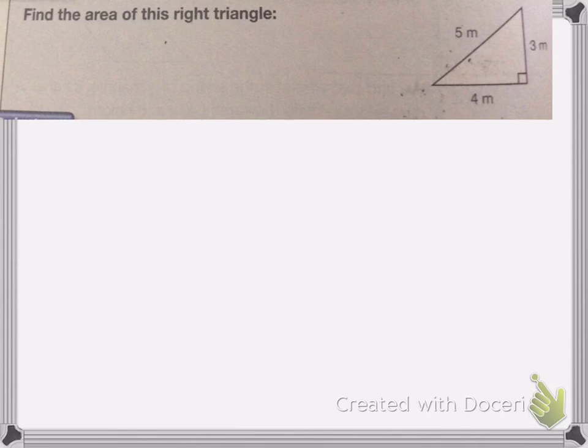Here, it wants us to find the area of this right triangle. In this case, it gives us the height as one of the sides, because it's a right triangle. That means that this side here has to be perpendicular for it to be a right triangle. I know it doesn't look like it on here, but it's because my picture's a little bit off.